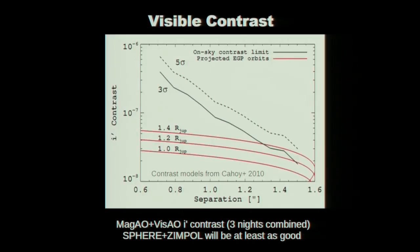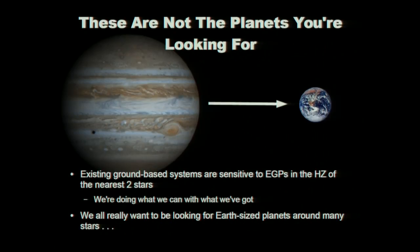In terms of the contrast we're achieving with VisAO, we're getting almost to a Jupiter radius at the outer edge of the hab zone of alpha Cen A. I've drawn the five-sigma line, but since we're looking for low probability occurrences, we might as well go to three-sigma. These curves are basically the phase curves of a gas giant planet orbiting the star, showing what a gas giant on a 2 AU orbit would look like versus separation. So we're almost there. But this is a project where we actually hope we fail, because we want there to be an Earth radius planet there, not a Jupiter radius planet.